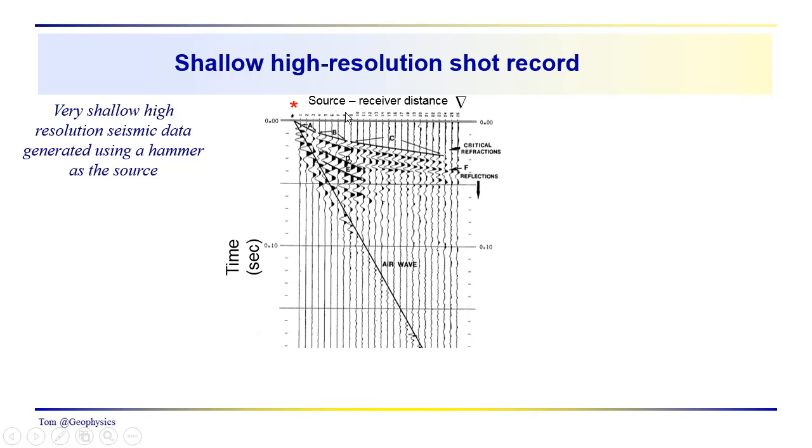And so we have this record of travel time out along the surface to each of these geophones of the different kinds of waves. And the point to highlight in this video is that waves reach points out along the surface along different paths. Different types of waves come to the surface at different times.